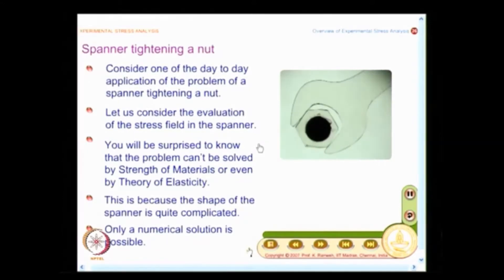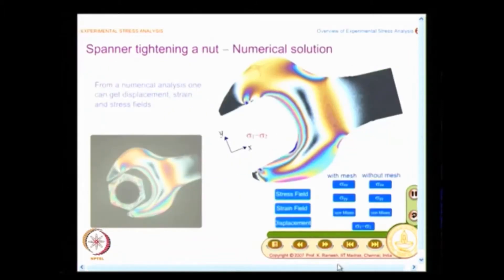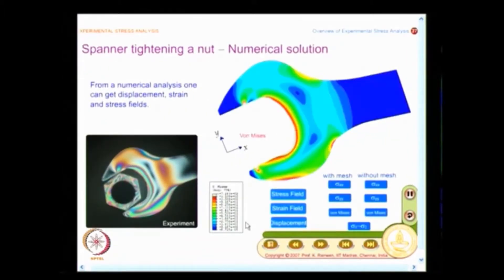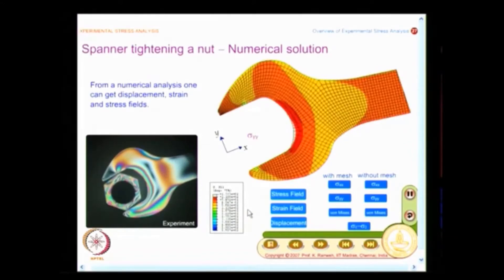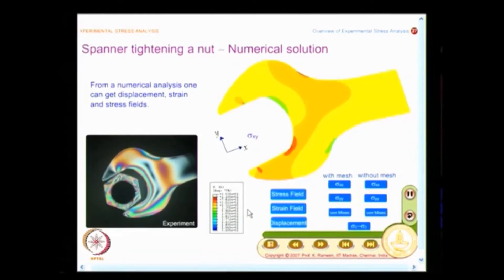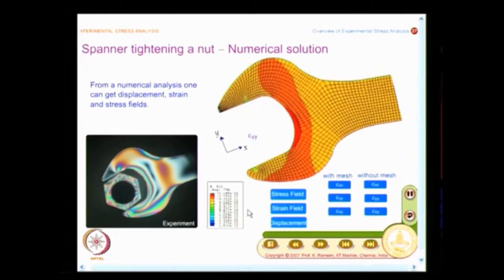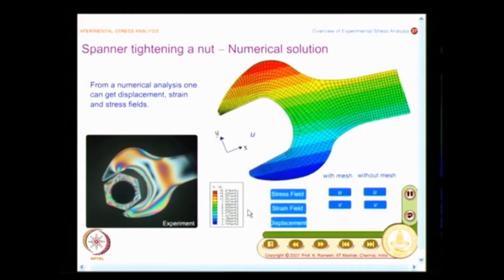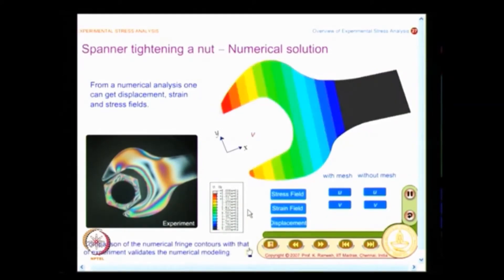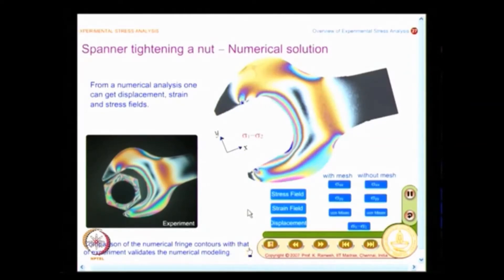I do not have a close form expression, so I have to solve this problem numerically. And let us see how the numerical solution is. You have very rich set of results that you get from a numerical solution. And in this case, the numerical method adopted is finite element method. And what you have done is, you have meshed the spanner and what you find here is, this is the experimental fringe pattern. And this is the simulated final treatment result of sigma 1 minus sigma 2 contours.